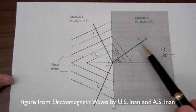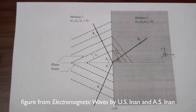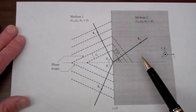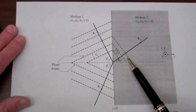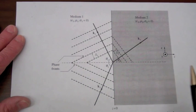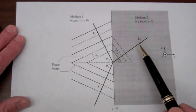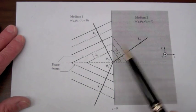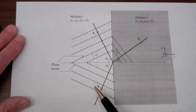the transmitted wave will have a different wavelength than the incident wave. And here we are showing that the wavelength in medium two is smaller than the wavelength in medium one, which means that the dielectric constant in medium two is greater than the dielectric constant in medium one.